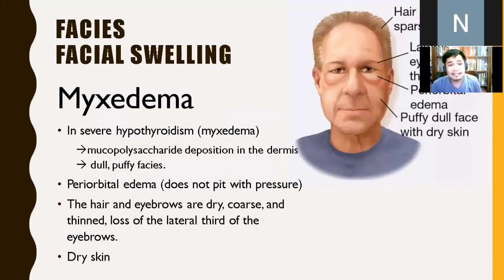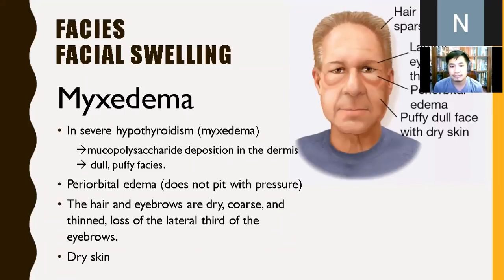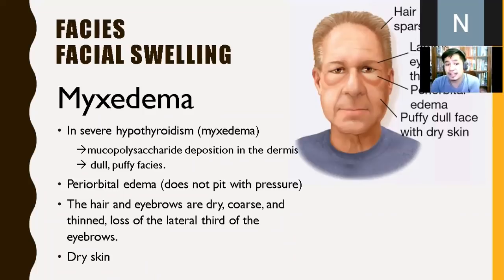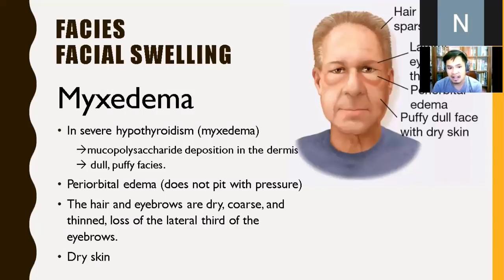Myxedema is a condition of severe hypothyroidism with decreased thyroid hormones, leading to mucopolysaccharide deposition in the dermis. The result is a dull and puffy face with periorbital edema. Hair and eyebrows are dry, coarse, and thin because decreased thyroid hormones slow metabolism and reduce proteins needed for hair growth, also causing dry skin.